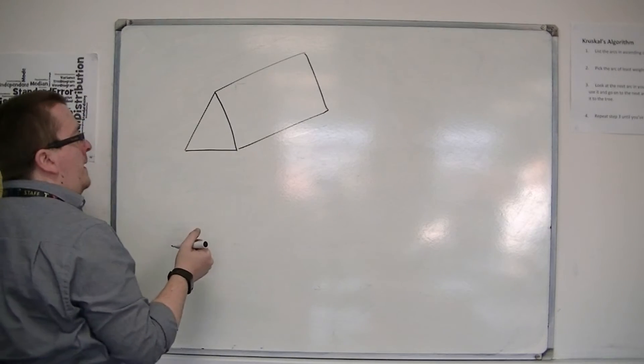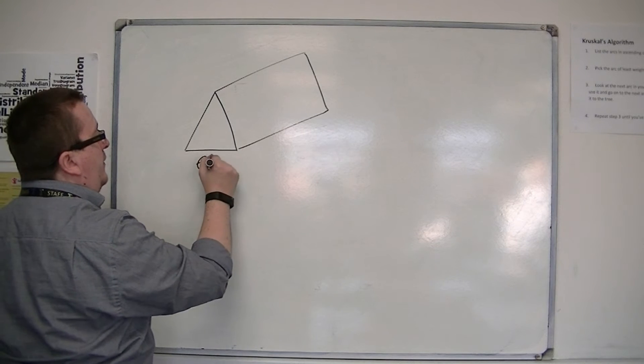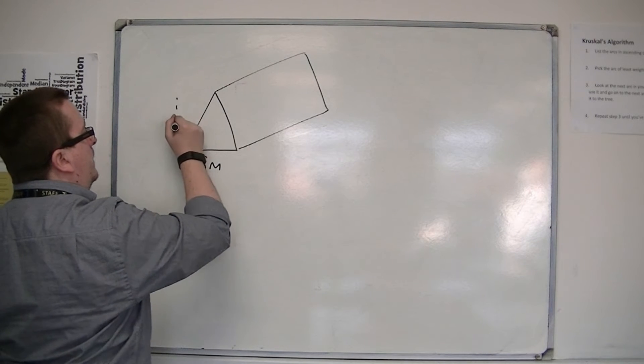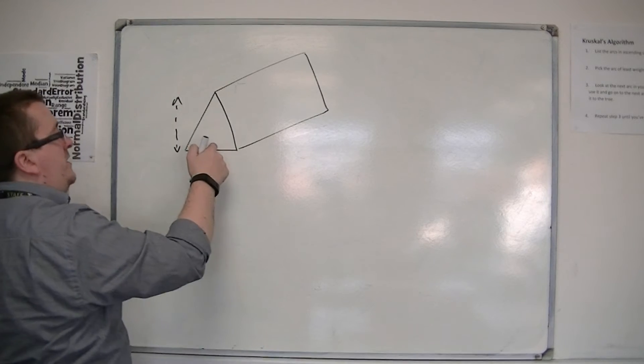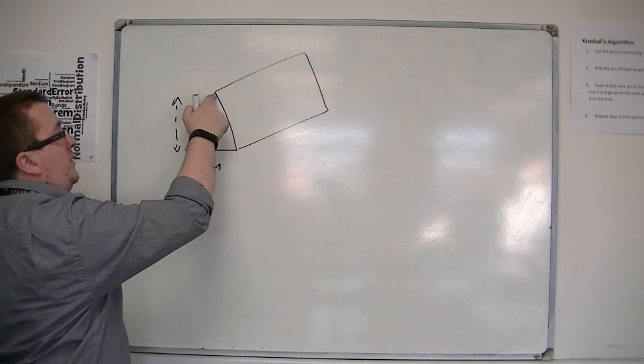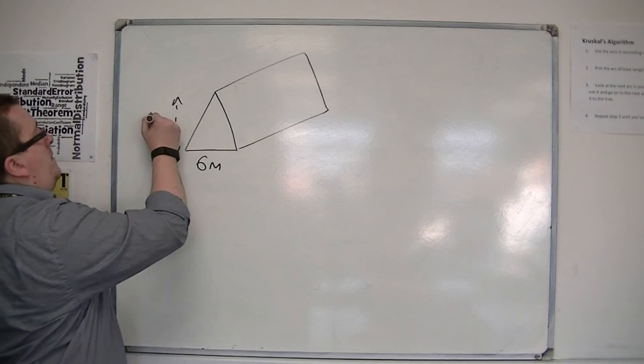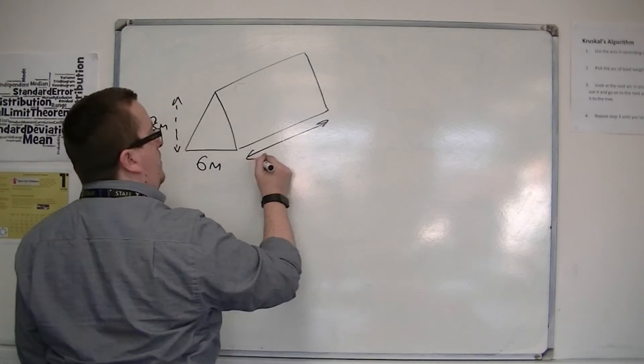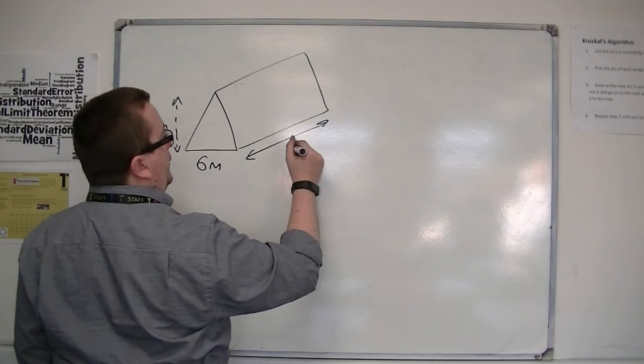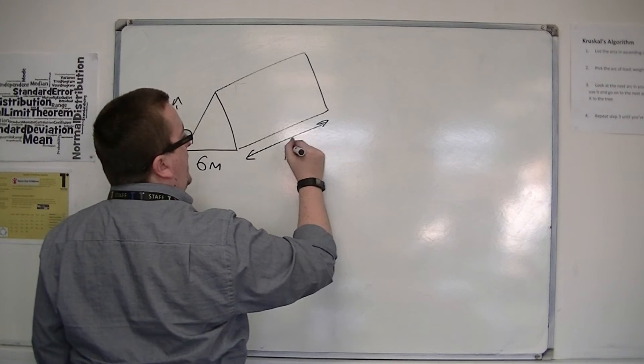...and we know that the base length is 6 metres, and the vertical height from the base to the tip of the triangle was 8 metres, and that the depth of the shape was 15 metres...